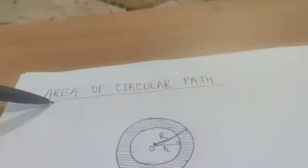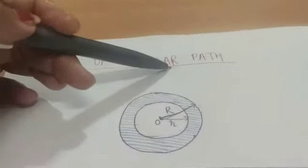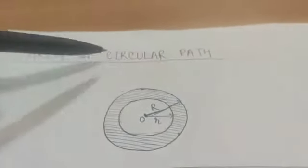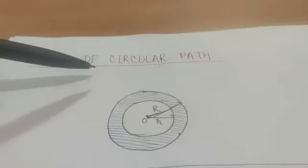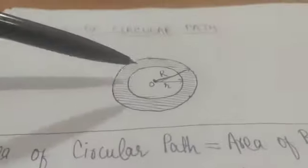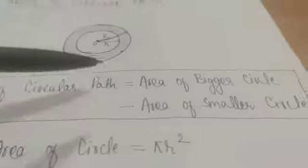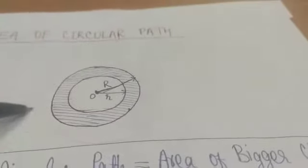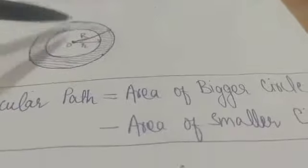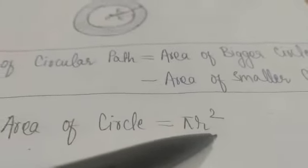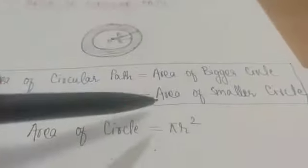The last topic of mensuration is area of circular path. Area of circular path is similar to area of rectangular path — the basic difference is the shape. The area of circular path is given by area of bigger circle minus area of smaller circle, and the area of a circle is given by pi r square.